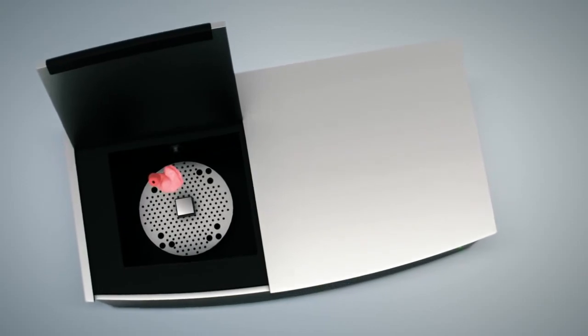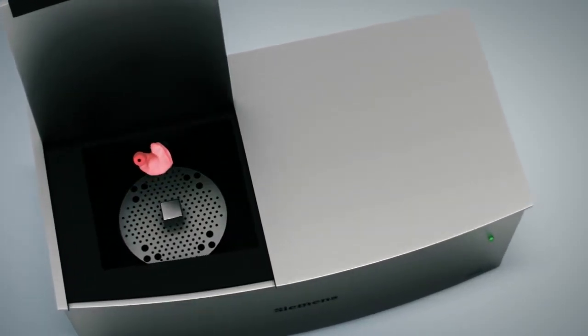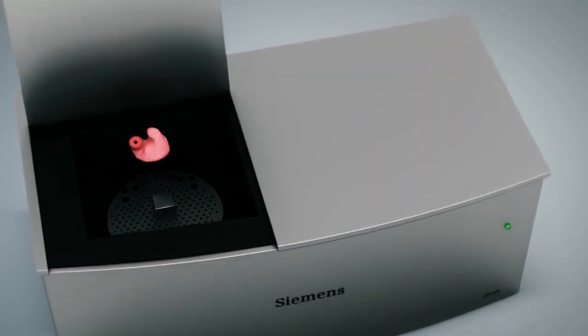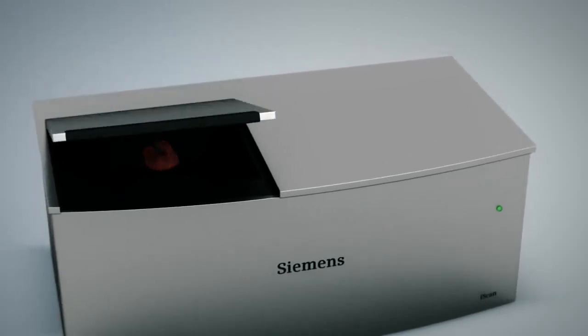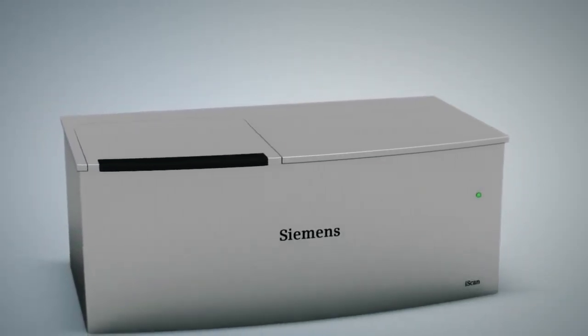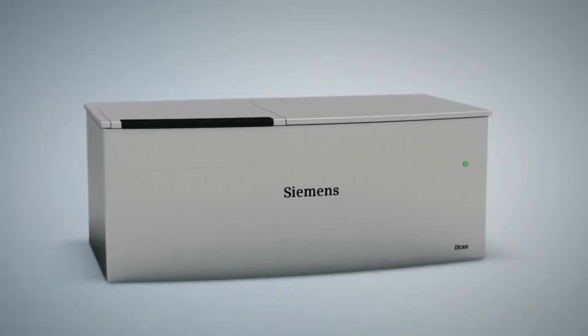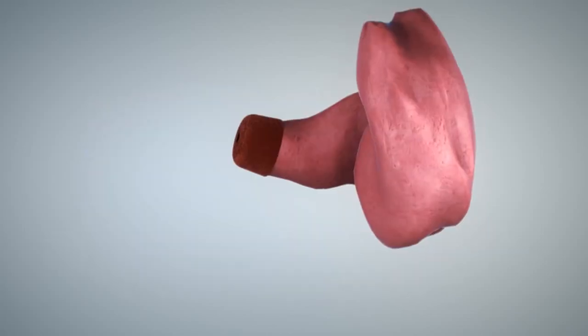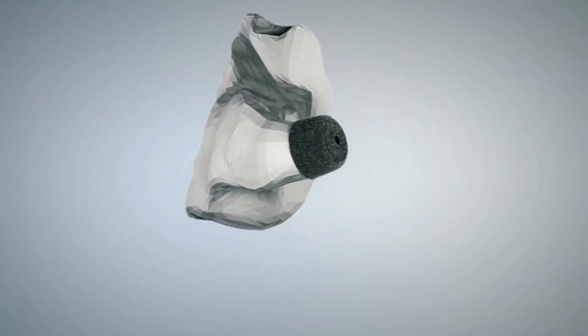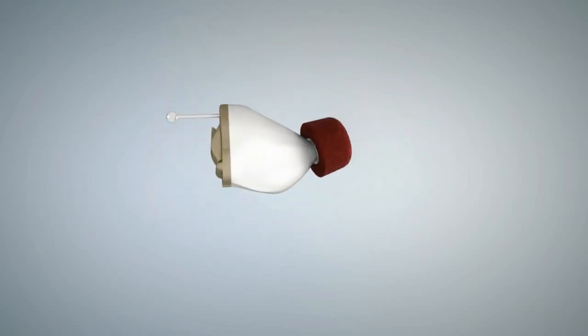All that's left to do now is to send the ear impression, including the dome, to your manufacturer. As an alternative, you can scan the ear impression using the Siemens iScan. The soft dome of Eclipse XL will be positioned at the exact same spot as the impression dome. This means there will be virtually no occlusion.